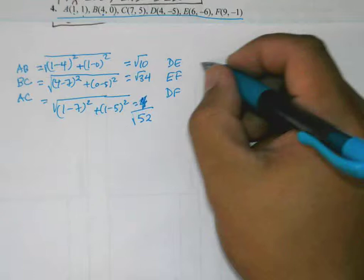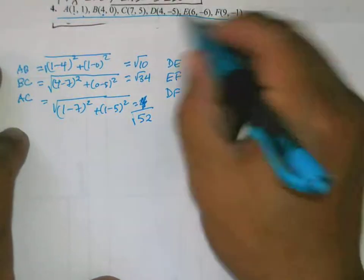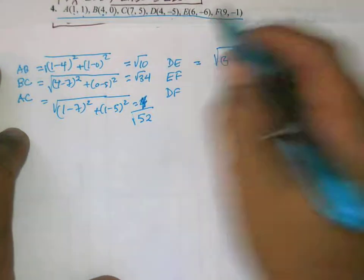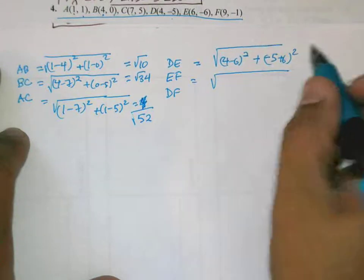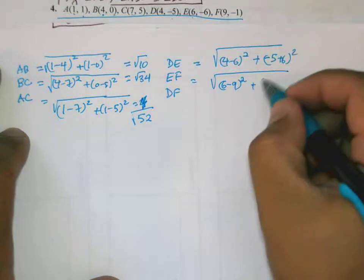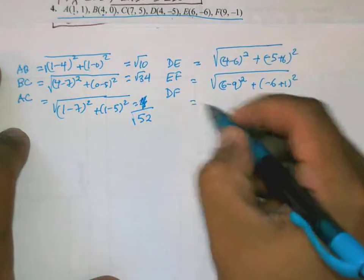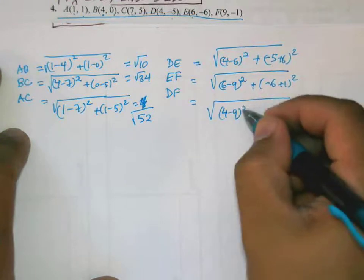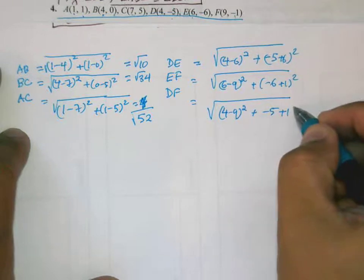Now let's figure out the same numbers for DEF. So DE is √[(4-6)² + (-5-(-6))²], which is √[(4-6)² + (-5+6)²]. EF is √[(6-9)² + (-6-(-1))²], which is √[(6-9)² + (-6+1)²]. And DF is √[(4-9)² + (-5-(-1))²], which is √[(4-9)² + (-5+1)²].